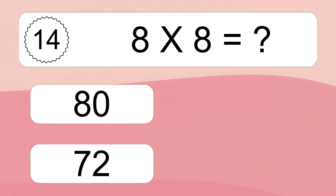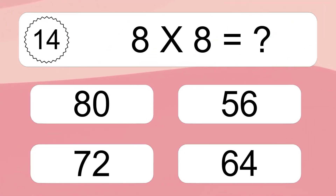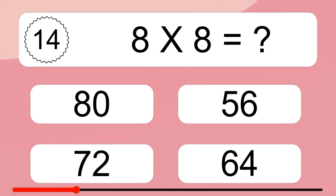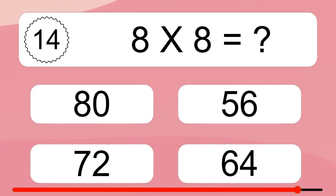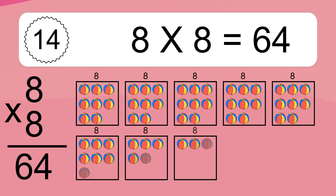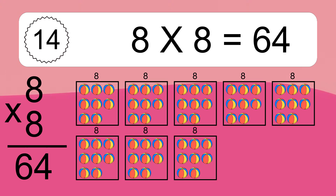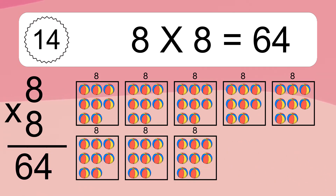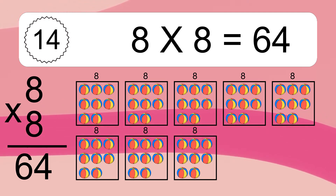8 times 8 equals what? 8 times 8 equals 64. We have 8 boxes, and each box has 8 colorful balls inside. If you count all the balls in all the boxes together, you will have 8 times 8 balls. This equals 64 balls.